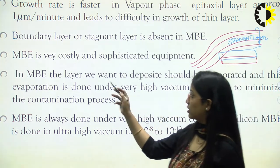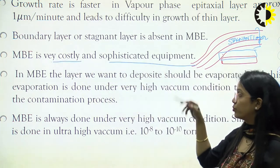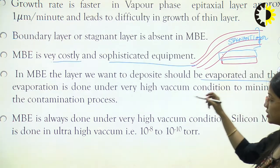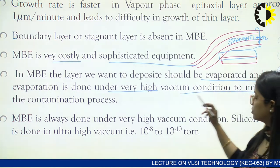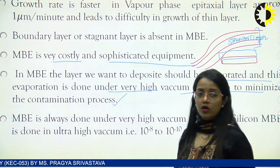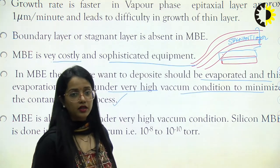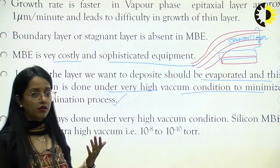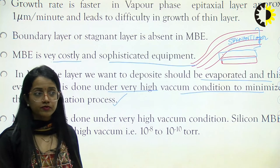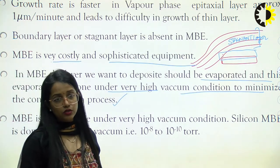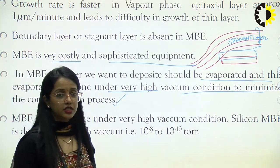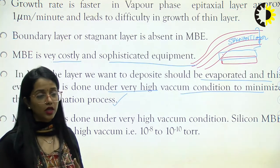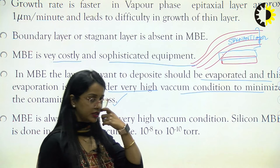Molecular beam epitaxy requires very costly and sophisticated equipment. In MBE, the layer we want to deposit must be evaporated, and this evaporation is done under high vacuum conditions to minimize contamination. MBE is always done under very high vacuum to ensure a contamination-free epitaxial growth — otherwise the wafer would also grow impurities from the environment along with the required material.